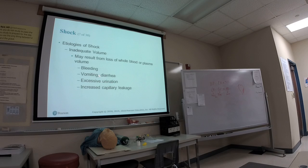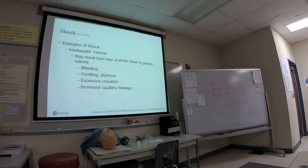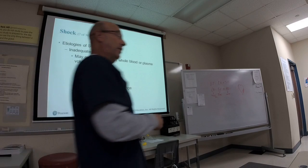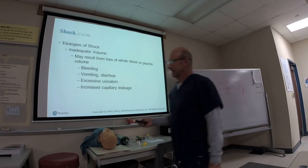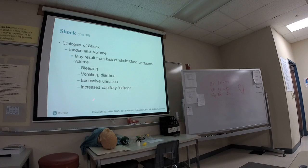We get inadequate volume from bleeding, diarrhea, vomiting, and excessive urination — polyuria. Polyuria is seen in conditions like diabetes, particularly DKA. There's also fluid loss from capillary leaking, as in burn patients or in CHF. When red blood cells are lost, we lose the capacity to carry oxygen. Volume can be replaced with IV fluids as a paramedic or in the hospital.